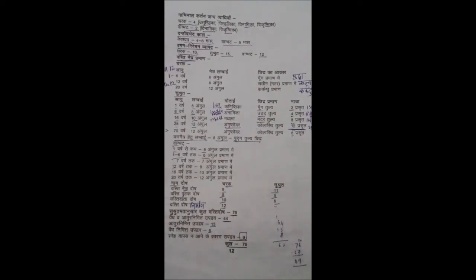અંગુલ, મુદ્ગ તુલ્ય છિદ્ર. વાગભટ: 1 વર્ષ સે કમ 5 અંગુલ પ્રમાણ, 1 સે 6 વર્ષ 6 અંગુલ પ્રમાણ, 7 વર્ષ 8 અંગુલ પ્રમાણ, 16 વર્ષ 10 અંગુલ પ્રમાણ, 20 વર્ષ 12 અંગુલ પ્રમાણ, 44 આથુર નિમિ, 15 વર્ષ 14, સ્નેહ વર્ષ 9, કુલ 76. થેંક્યુ.